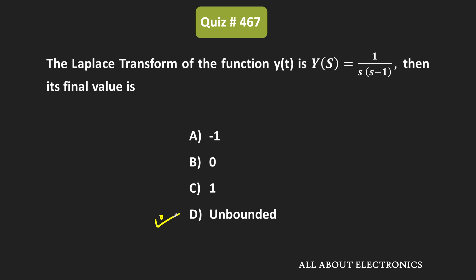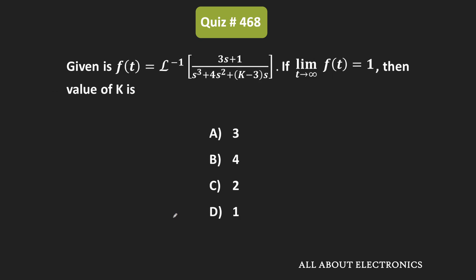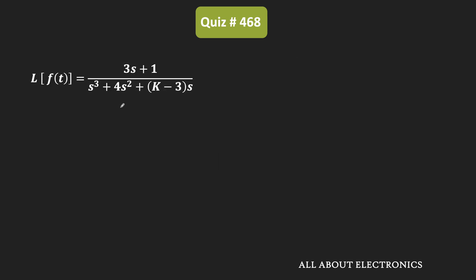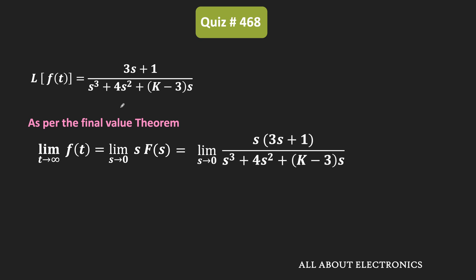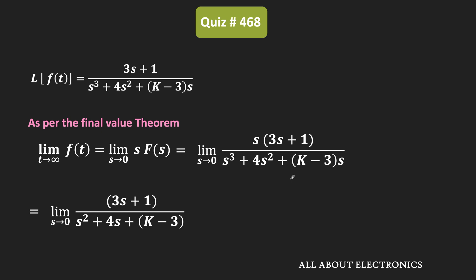Now let us move to the next question. We have been given the Laplace transform of f(t), and we are told that as t→∞, f(t) = 1. We need to find the value of the constant k. Using the final value theorem: limit t→∞ of f(t) = limit s→0 of s·F(s). Taking s outside the denominator and simplifying, we get limit s→0 of (3s+1) / (s²+4s+k−3).